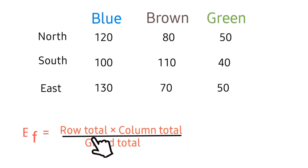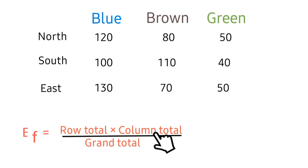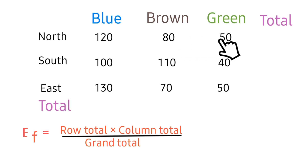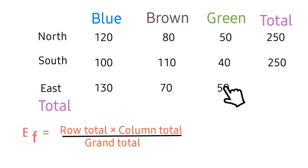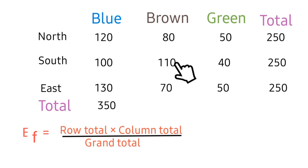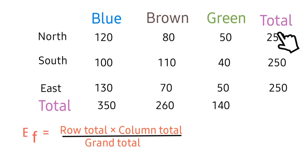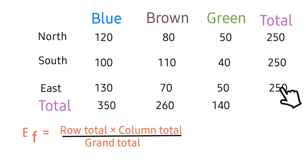We use this formula to calculate the expected frequencies for the nine cells: row total times column total divided by grand total. For the row total, we total all the rows — 120, 100, 130 — and for the column total, we total all the columns — 120, 80, 50. The grand total can be obtained by adding all values up: 250 plus 250 plus 250, or equivalently summing the column totals.